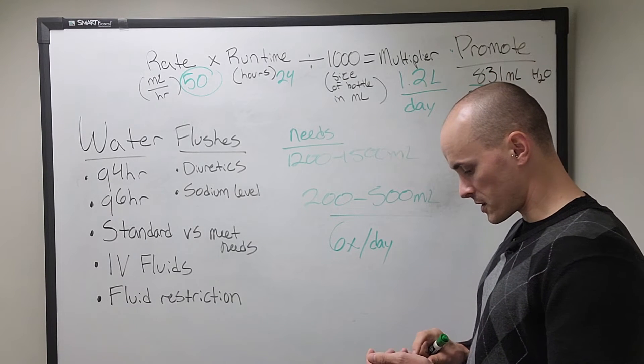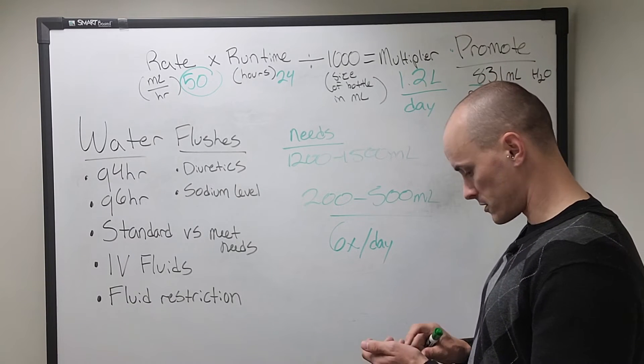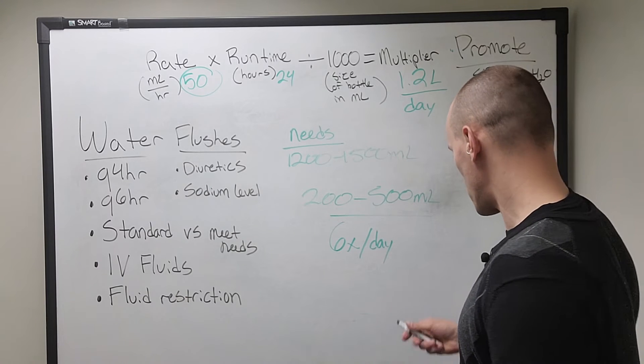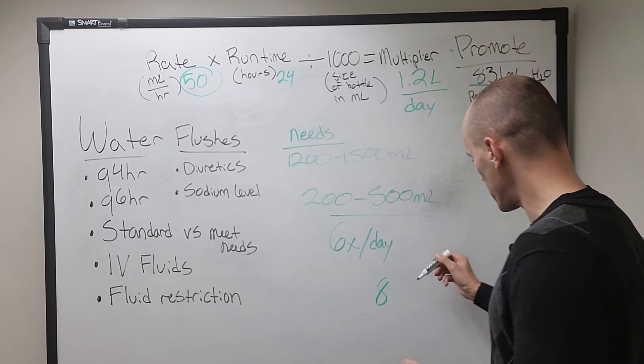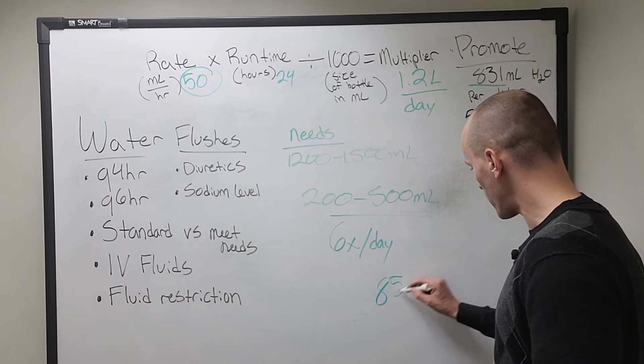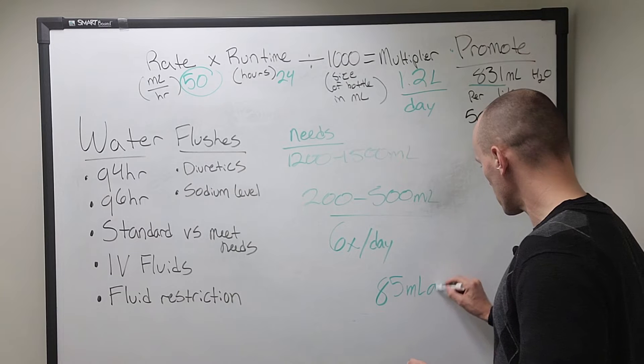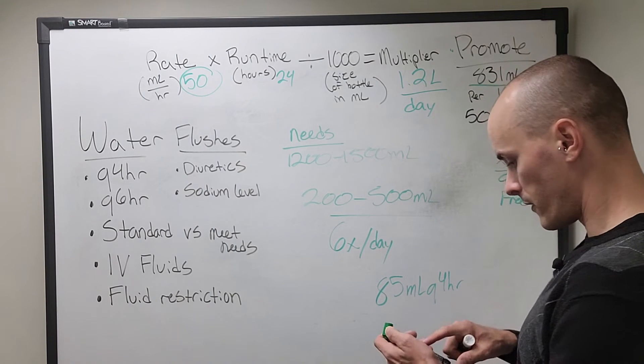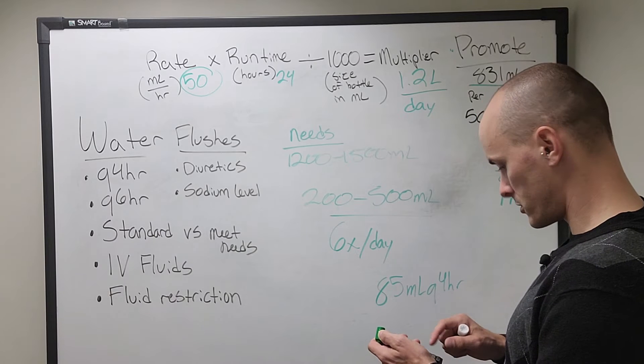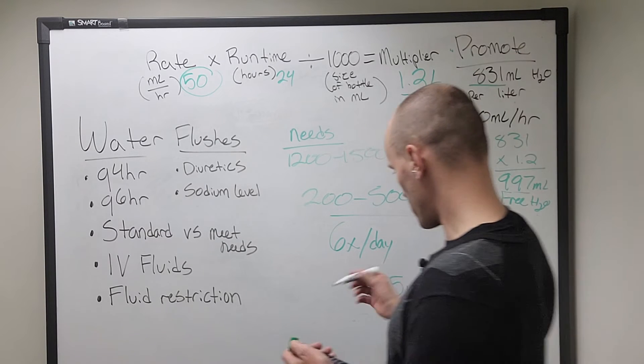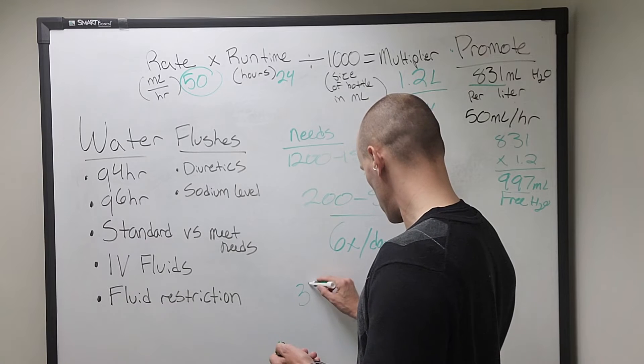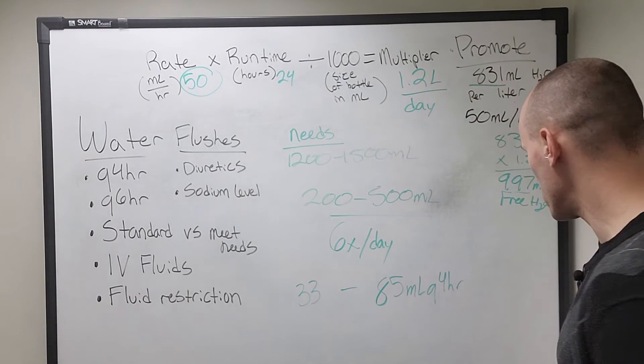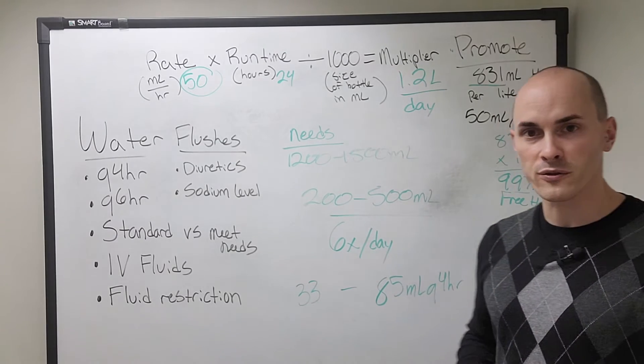So let's just take the upper number 500 and divide it by six. That gives us 83. So we could say that on the upper end, they need 85 mils Q4 hours. And you all see that. And then on the lower end, 200 divided by six, that's 33. 33 to 85 milliliters Q4 hours for their flushes.